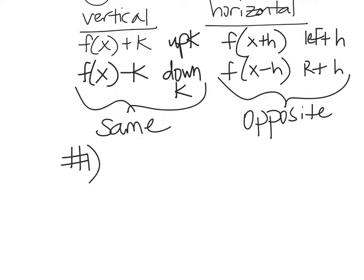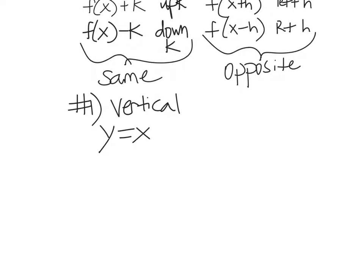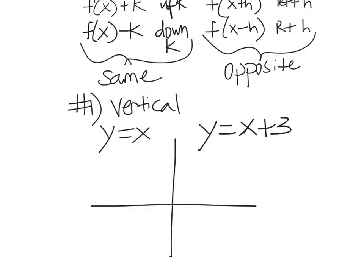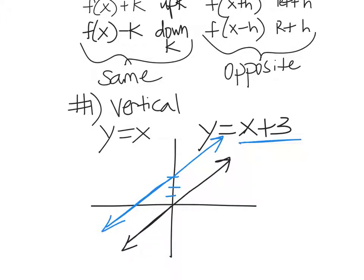Let's do some vertical shifts — just vertical first. Let's take our parent function y equals x and graph y equals x plus 3. We're going to take our graph y equals x — here's the parent function — and now I'm going to take this graph and move the whole thing up 3: 1, 2, 3. And there it is. You might look at this and notice it also shifted 3 horizontally to the left. It did that too — 1, 2, 3. Pretty cool.